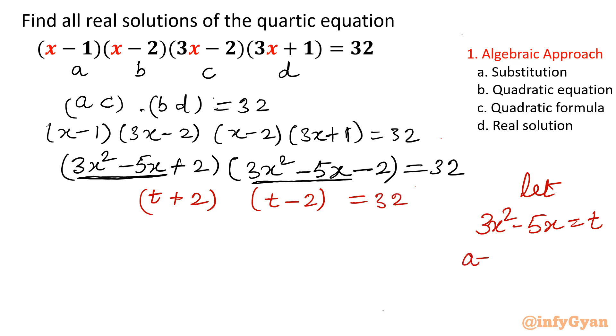Now using the difference of squares formula, (a + b)(a - b) = a² - b², we get t² - 4 equal to 32. Add 4 to both sides: t² equal to 36. Taking square root of both sides, t equals plus or minus 6.